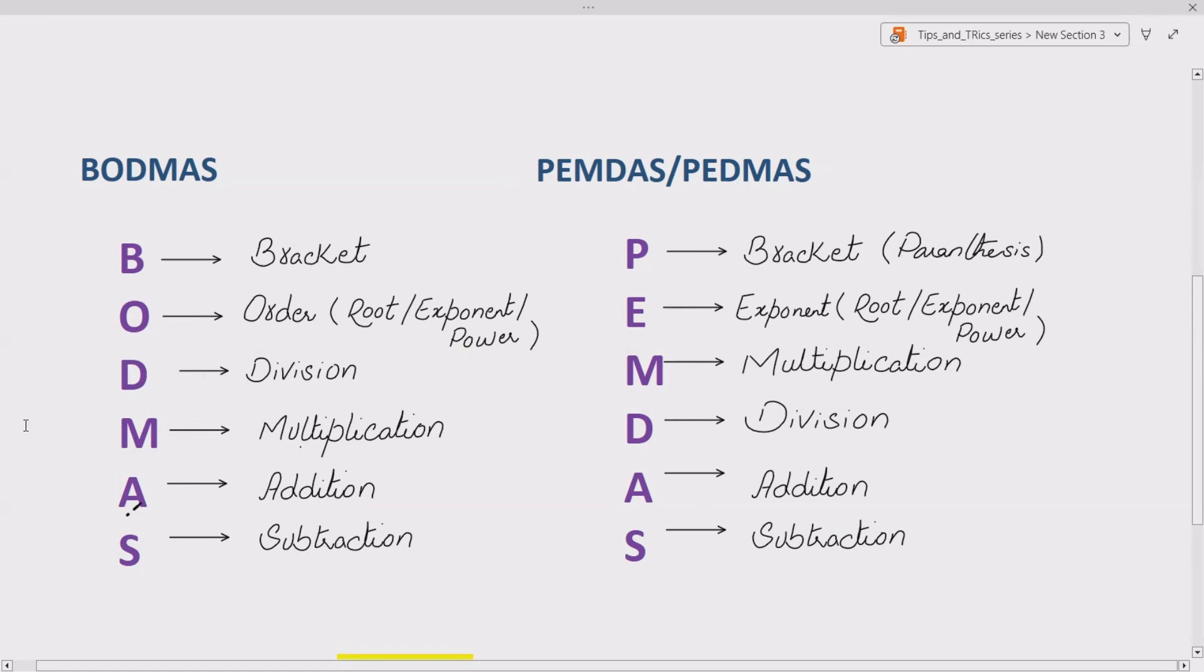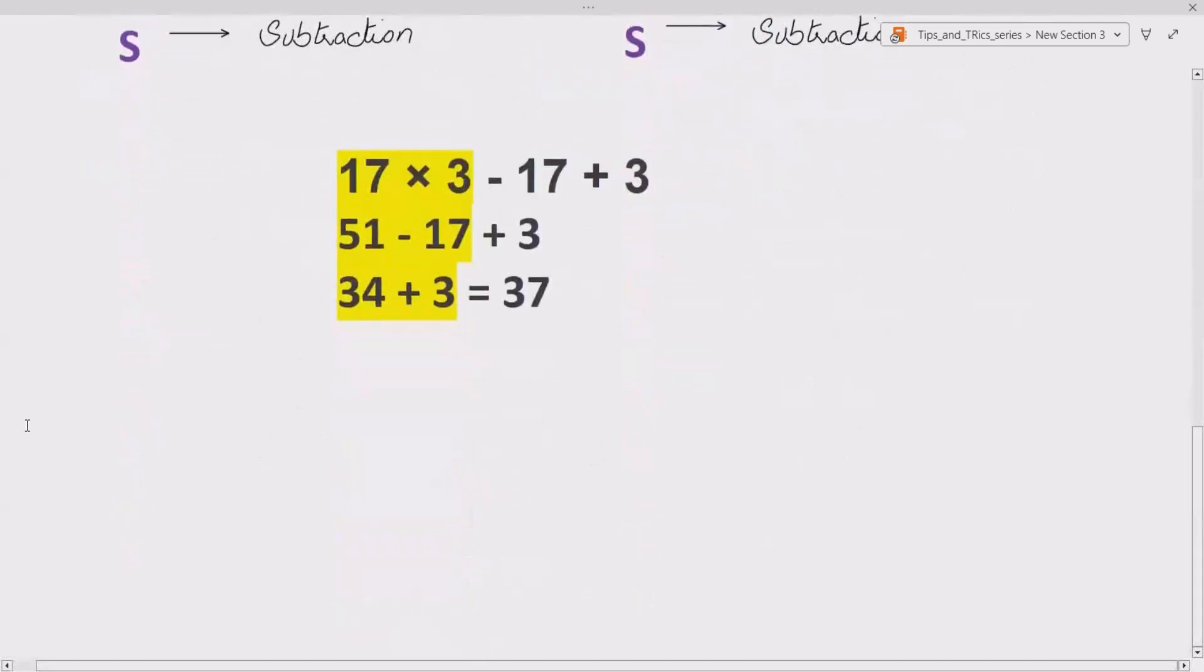Now let's see how we can solve our expression using this method. So we have 17 into 3. According to BODMAS we have to solve it. 17 into 3 gives us 51 minus 17 plus 3 remains as it is. Now 51 minus 17 gives us 34. 34 plus 3 gives us 37, i.e. the correct answer is part C.